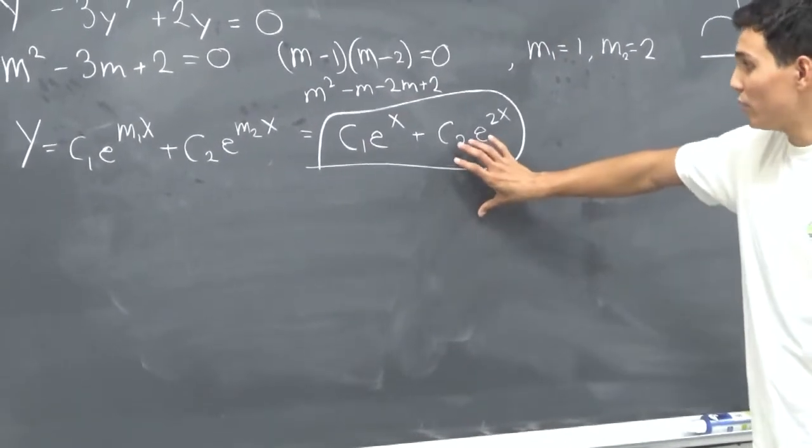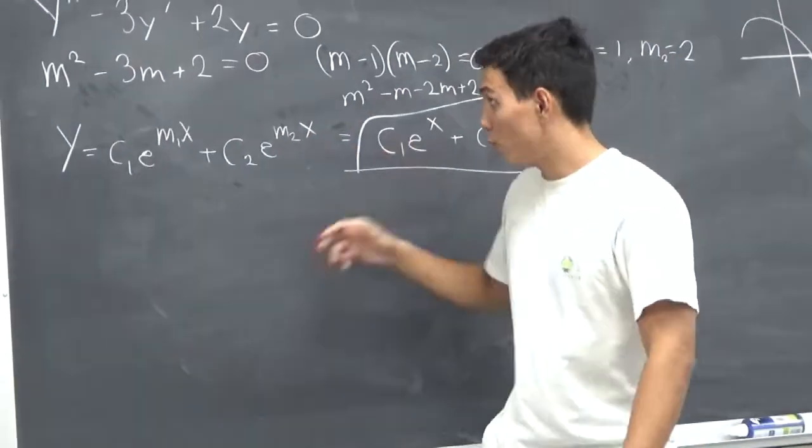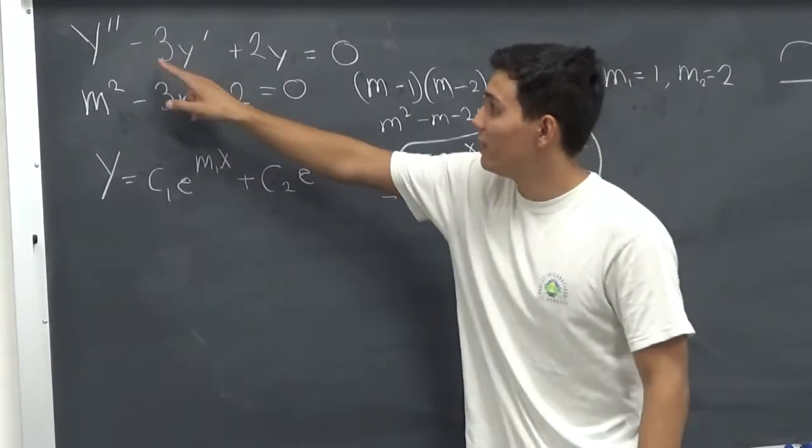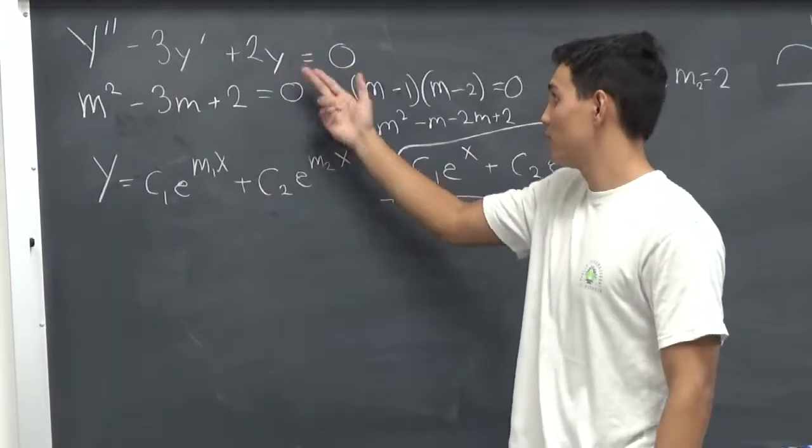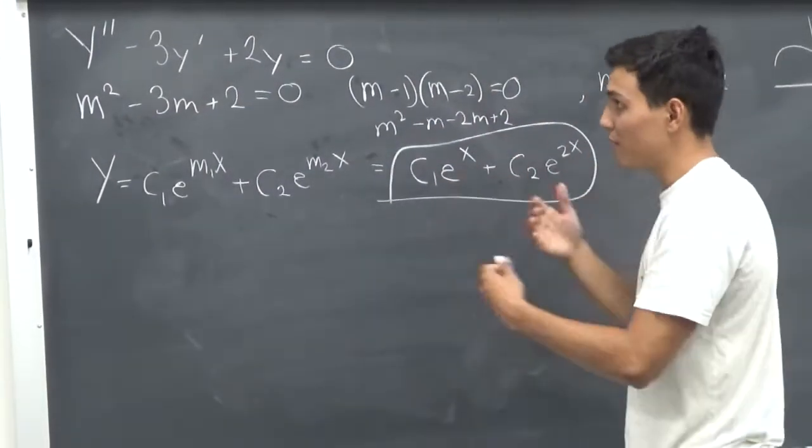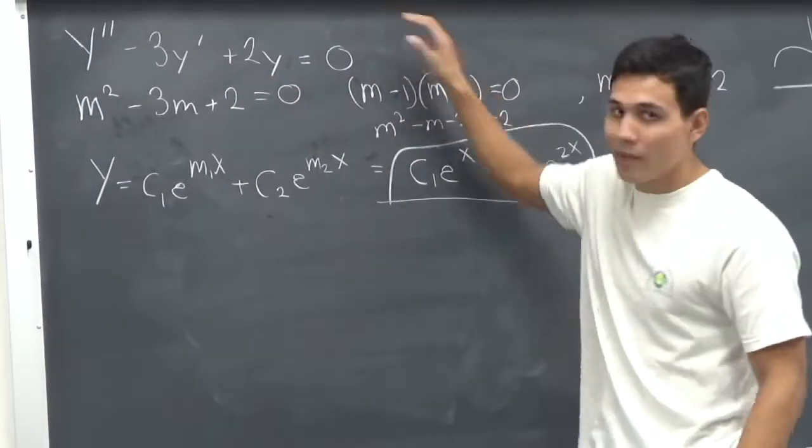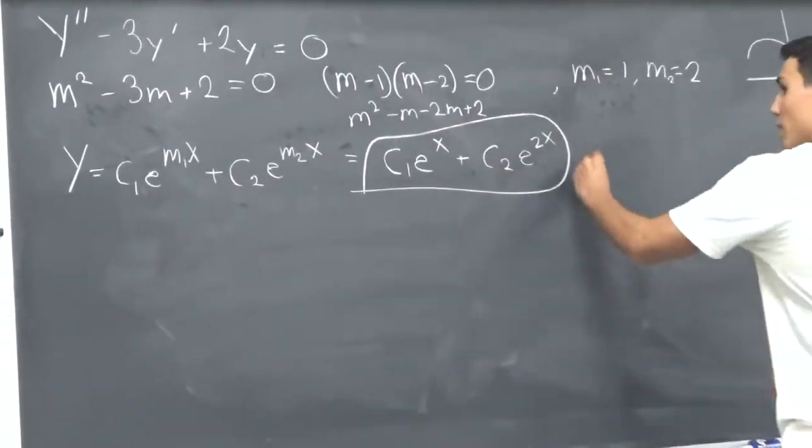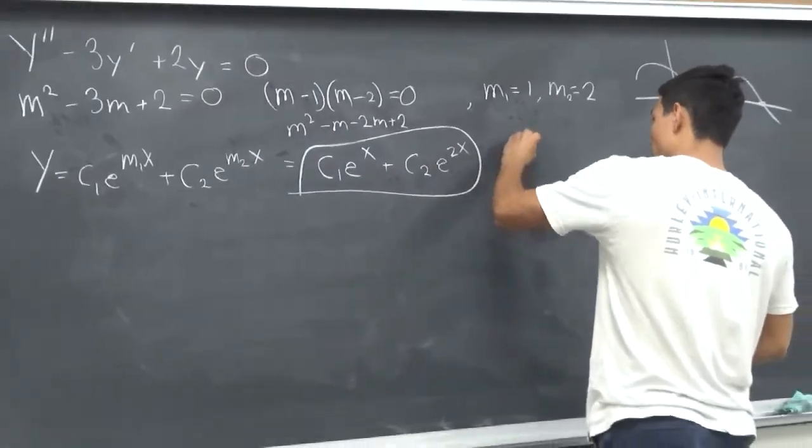The way you can check it is you can use this and take its derivative twice and then take its derivative once and multiply it by negative 3 and then plus this 2y and see if it equals 0. If it equals 0, if you can use this and recreate the differential equation and it equals 0, then it's the correct answer. So this is y, let's take y prime.